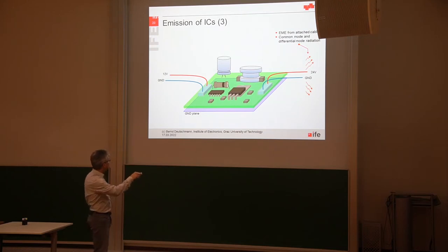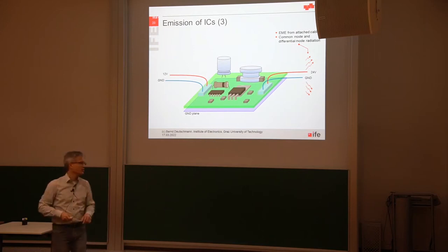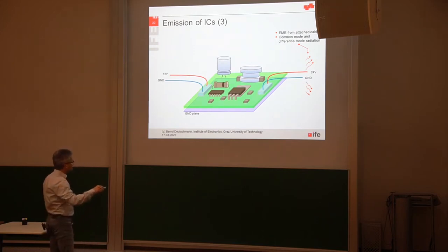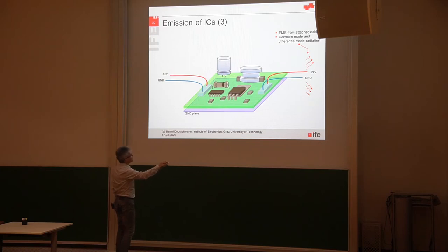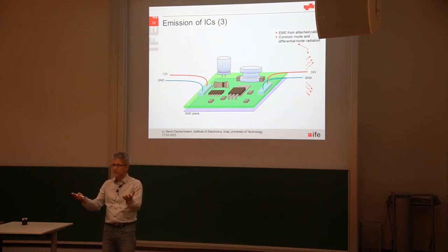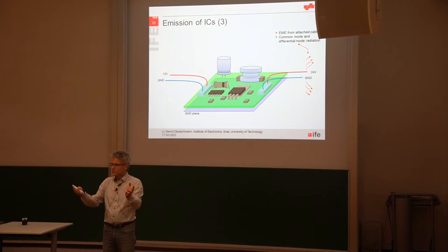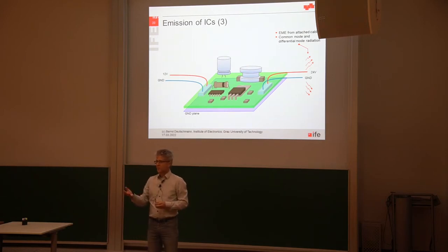When we turn on the circuitry there is switching activity — there is di/dt. So there is a current that is changing. The current is flowing in a loop and parts of the current can also flow along the ground plane. One layer of this printed circuit board is acting as a ground plane. To be honest, we should not call it a ground plane — it should be a signal return plane, because the name ground plane gives the impression that ground is zero potential all over and no current is flowing. This is not the case in reality.